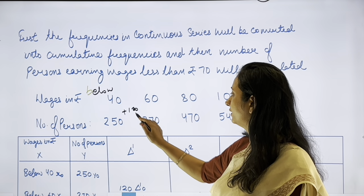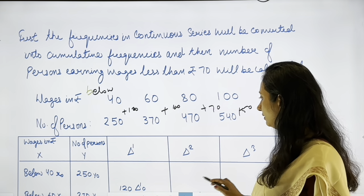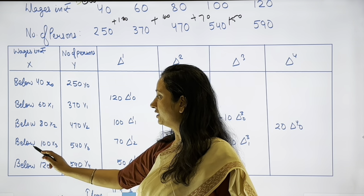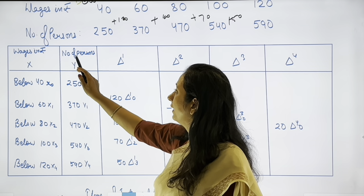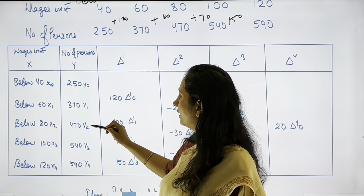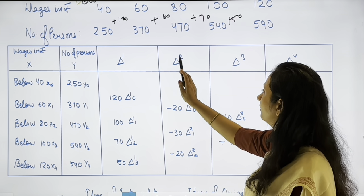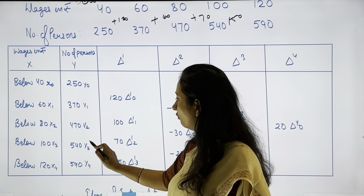Building the difference table: wages below 40, 60, 80, 100, 120 are x0 to x4; cumulative persons y0 to y4 = 250, 370, 470, 540, 590. First differences (Δ¹): y1−y0 = 120, y2−y1 = 100, y3−y2 = 70, y4−y3 = 50. Second differences (Δ²): 100−120 = −20, 70−100 = −30, 50−70 = −20. Third differences (Δ³): −30−(−20) = −10, −20−(−30) = +10. Fourth difference (Δ⁴): 10−(−10) = 20.